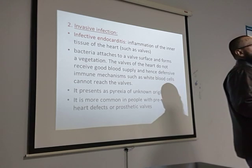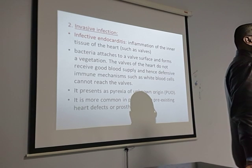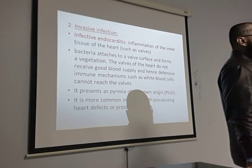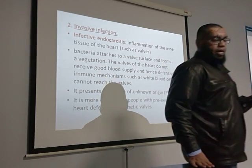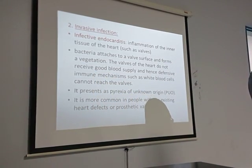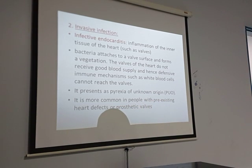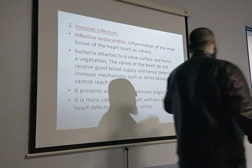Vegetation is the growth of bacteria into a colony on the heart valve. This causes inflammation of the heart valve — infective endocarditis. If there is inflammation and vegetation on the cusp of the valve, the valve cannot function properly, leading to mitral stenosis. If it is not opening — narrowing and stiffening — it is stenosis. If it allows backflow of blood, it is regurgitation.